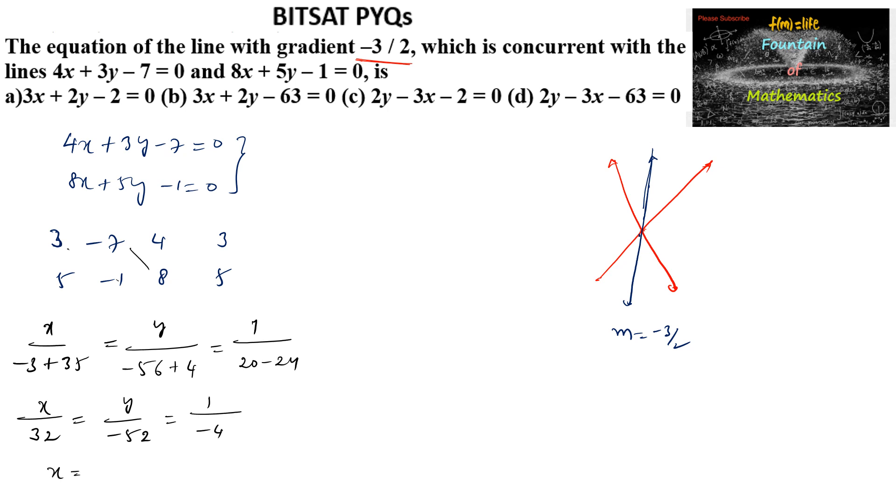Or x is equal to 32 upon negative 4 is minus 8, and y is equal to minus 52 upon negative 4 is 13. So we got the point of intersection minus 8 comma 13 and having the slope is minus 3 by 2.